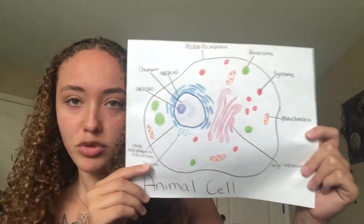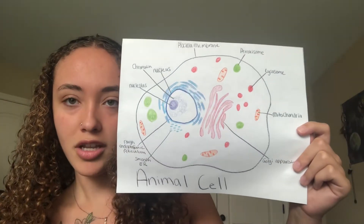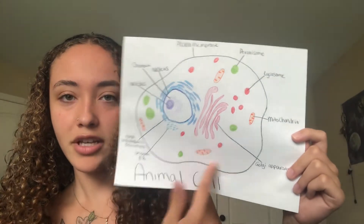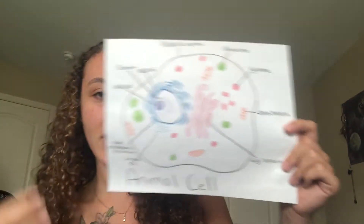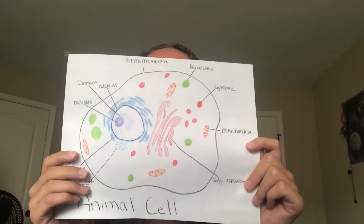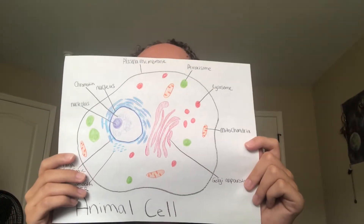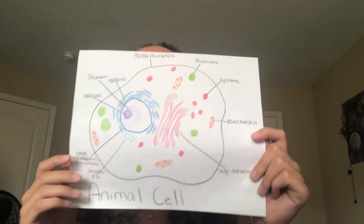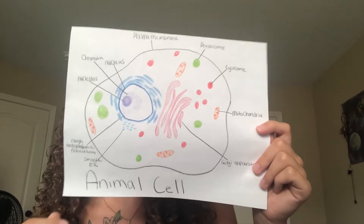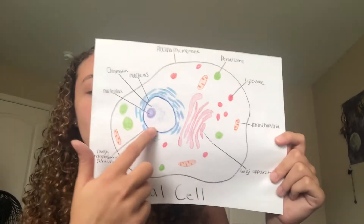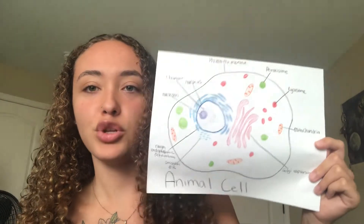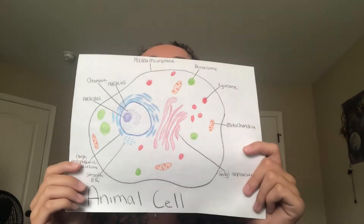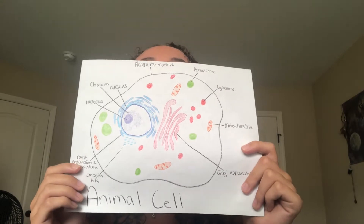This is an animal cell and the big circle around it is the plasma membrane, which protects and regulates what comes in and what goes out of the cell. This purple circle is the nucleus, which stores the cell's DNA and controls all the cellular functions.